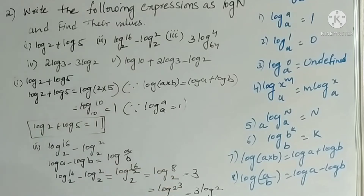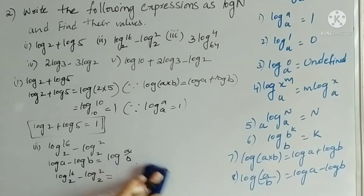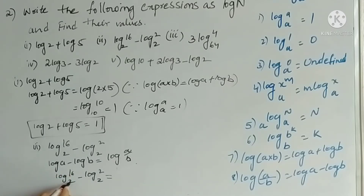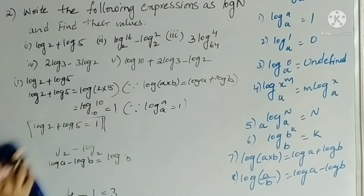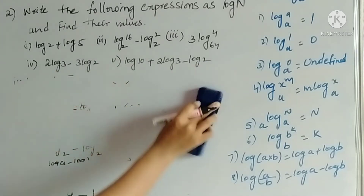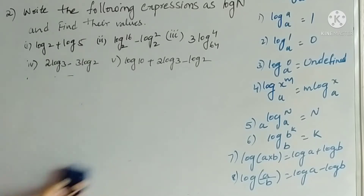Alternatively, log 16 base 2 equals 4 because 2 to the power 4 is 16, and log 2 base 2 equals 1. So 4 minus 1 equals 3. Either way the answer is 3.